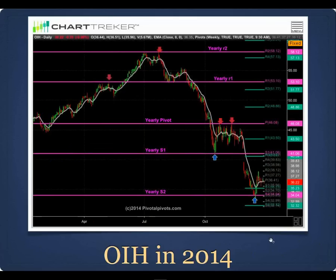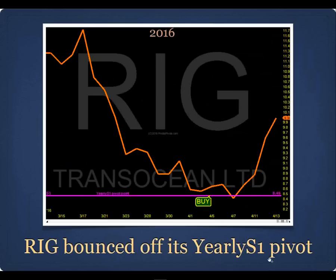Here's OIH in 2014: it came up to the yearly R1 pivot, broke through, came up to R2, did a double top, pulled back to R1, got a dead cat bounce, fell hard to S1, bounced to the yearly pivot, then broke back through and came down to S2 — going from yearly R1 to yearly S2 in one year. RIG: we recommended buying at $8.50 right on the yearly S1 pivot last month, and recommended selling half at $11.